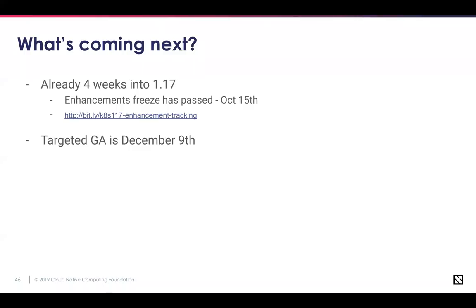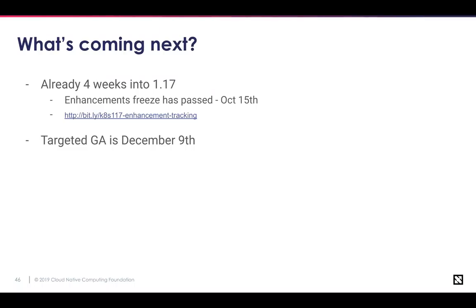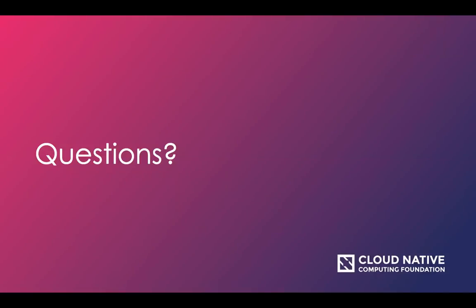What's coming next: the 1.17 release of Kubernetes is already in progress — a few weeks in and enhancement freeze passed on October 15th. There's a link to the tracking spreadsheet if you're interested in what features are going into 1.17. The targeted release for Kubernetes 1.17 is December 9th, 2019 — right after KubeCon. Check out SIG Release for information about the release timeframe and windows. This webinar is being recorded and will be available on YouTube at a later date.